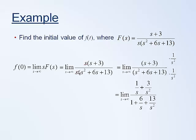So if we distribute the one divided by s squared through the top, we get one over s plus three divided by s squared. And if we do the same thing at the denominator, you get s squared divided by s squared, which is one. Six s divided by s squared is six divided by s. And then you get 13 over s squared.